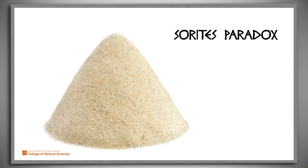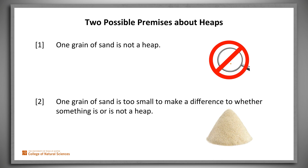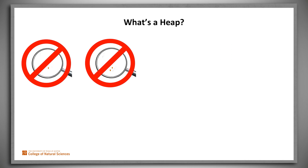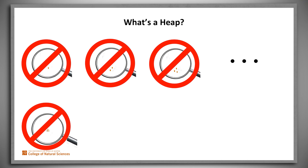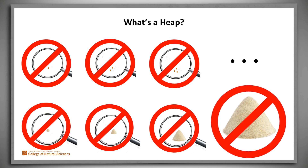Where is the paradox? Suppose that we accept these two premises about heaps and non-heaps. One grain of sand is not a heap. One grain of sand is too small to make a difference in determining whether something is or is not a heap. In other words, adding one grain to a non-heap doesn't make a heap. Then we have that one grain isn't a heap, neither is two, or three, and so forth. So this isn't a heap, and neither is this, or this, or even this — the actual heap we started with.